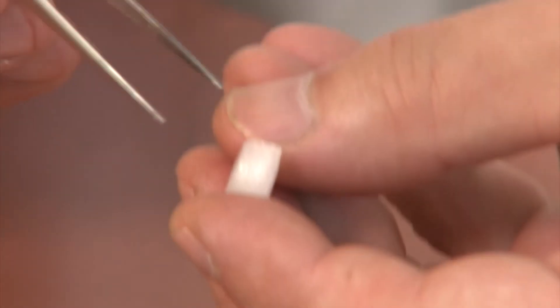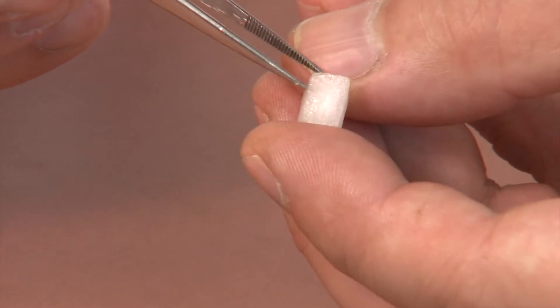Using fine forceps, carefully peel the clear layer of tissue from the inner, concave surface of a piece of onion.